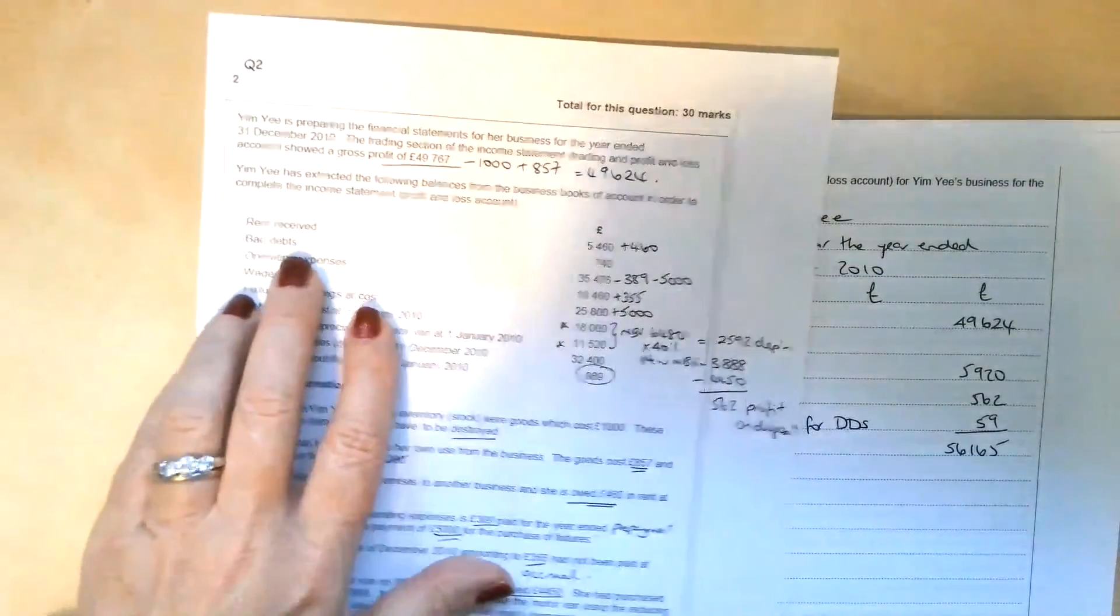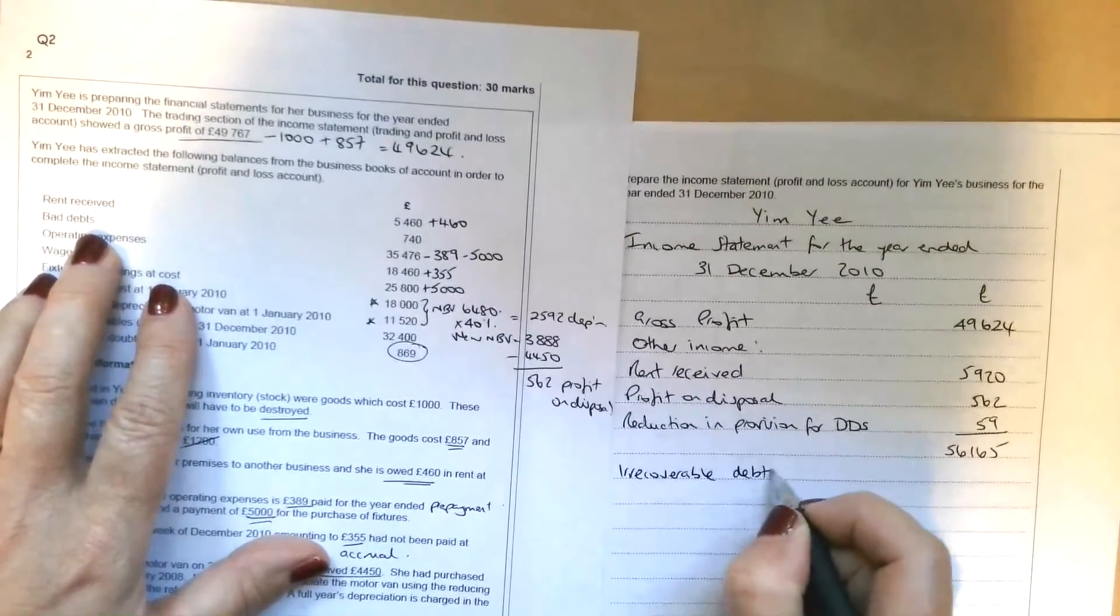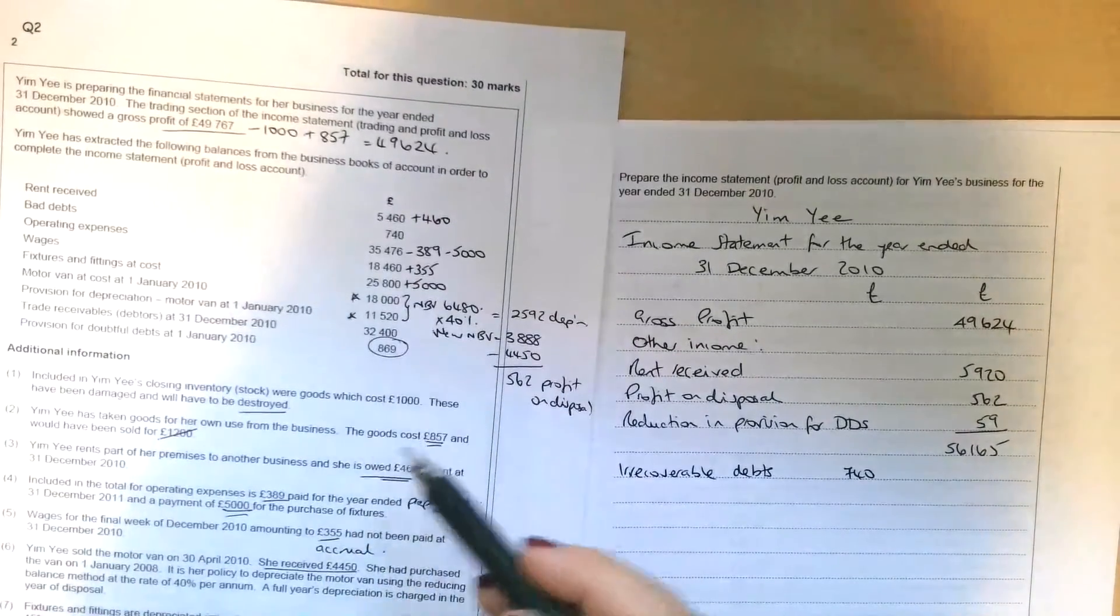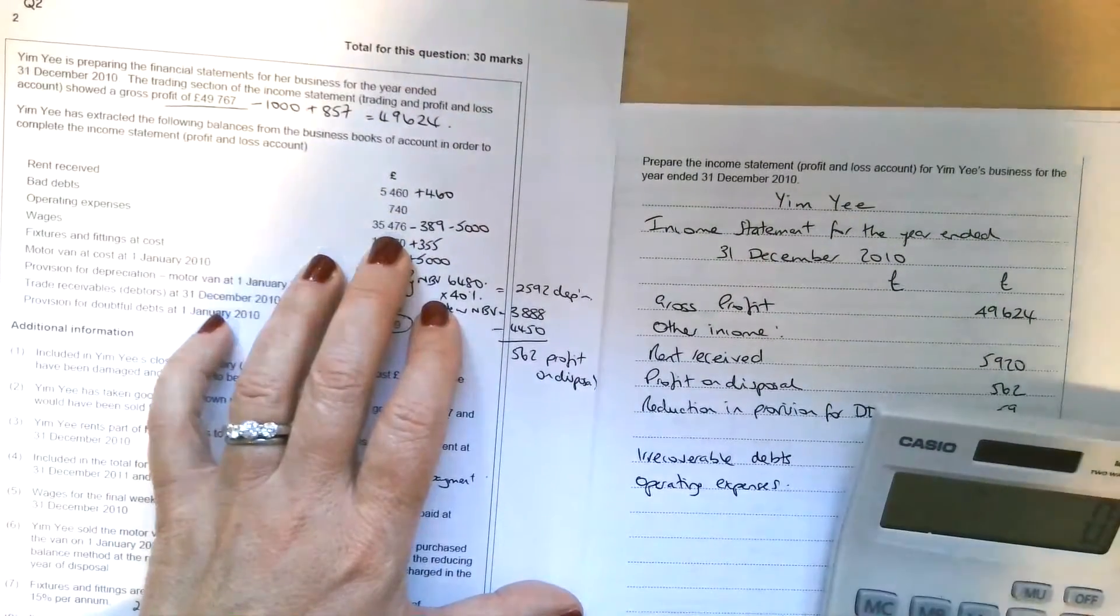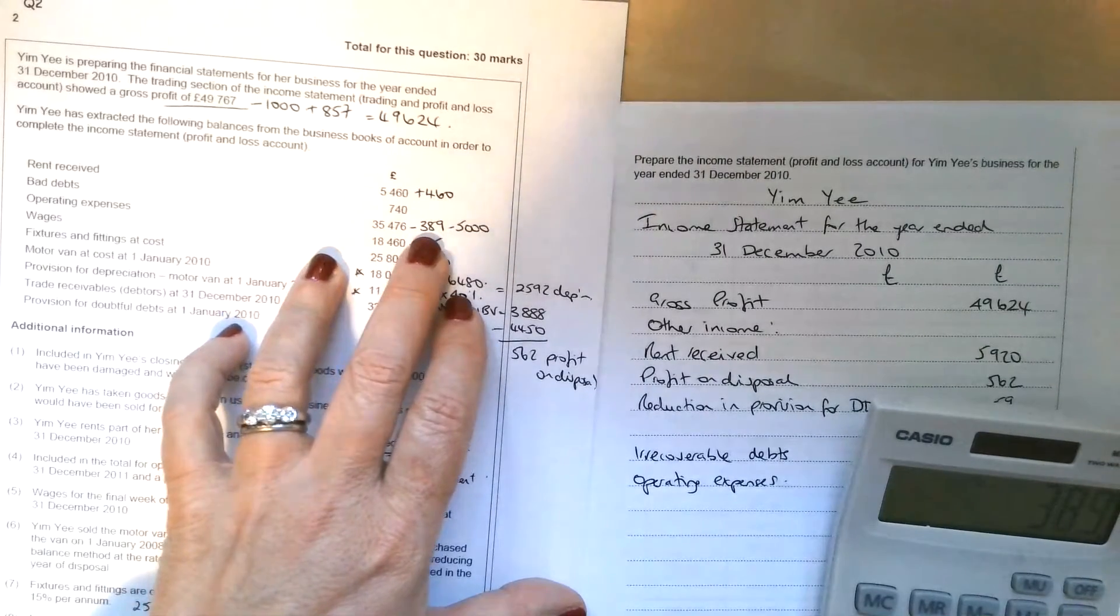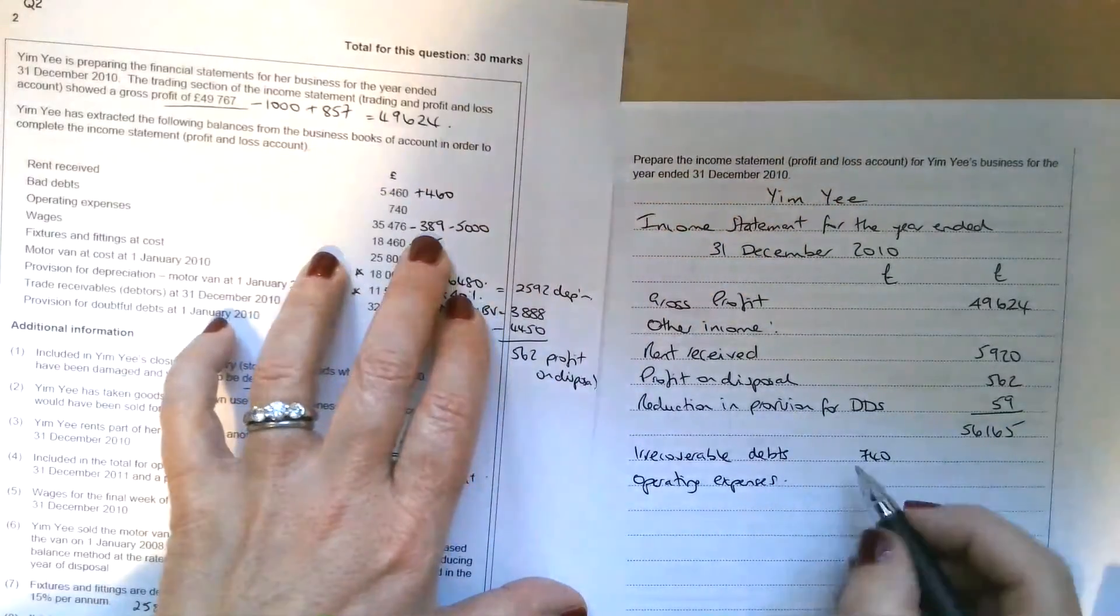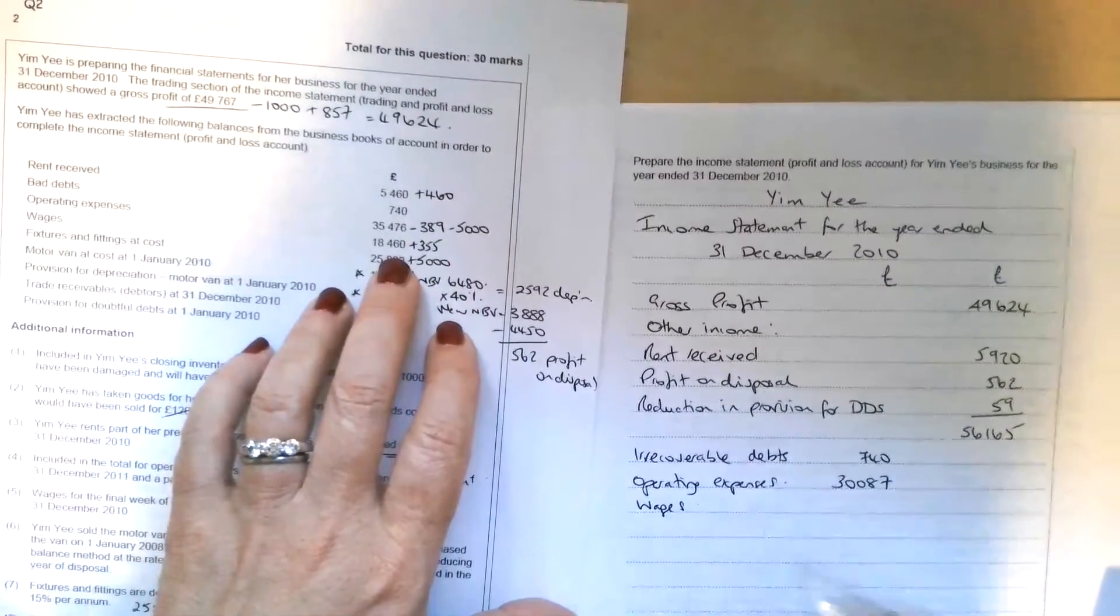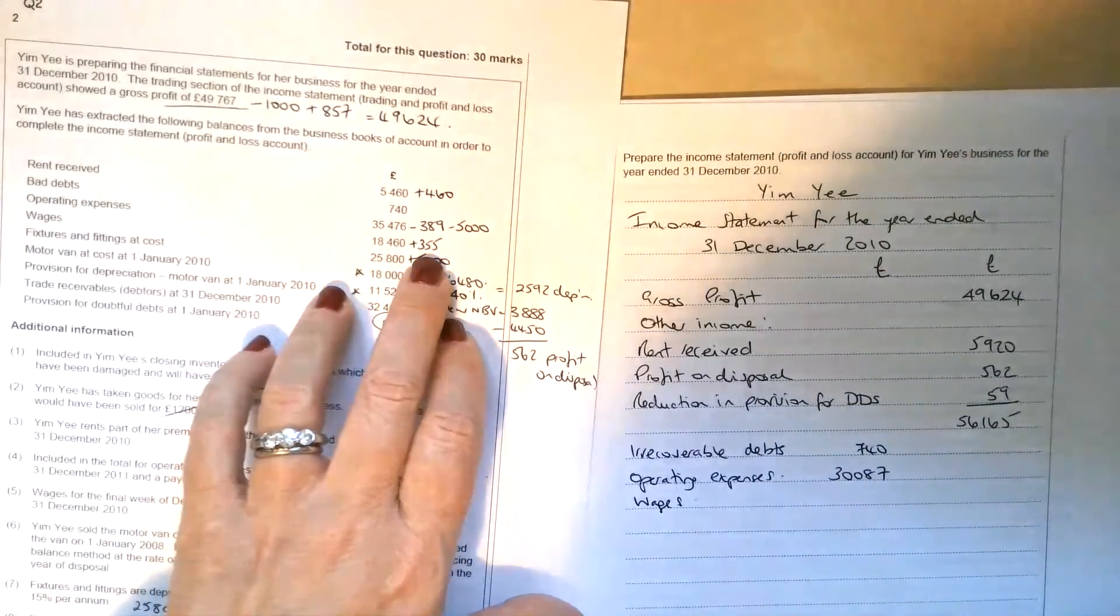If we go down the list here, we've got irrecoverable debts. I'm just going to deal with them in the order that they're given here. So irrecoverable debts, there were no changes to that. They'd already been taken off of the trade receivables figure. You'd only take them off trade receivables if you were given some additional information, but we weren't. They've already been dealt with. The operating expenses, we've got £35,476. We've got to take the £389 off there, which was the prepaid expense, and then take off the £5,000 error of principle. So that's going to give you £30,087. Then we've got the wages, and we had an accrual on the wages. So we've got £18,460 plus the £355, which is £18,815.